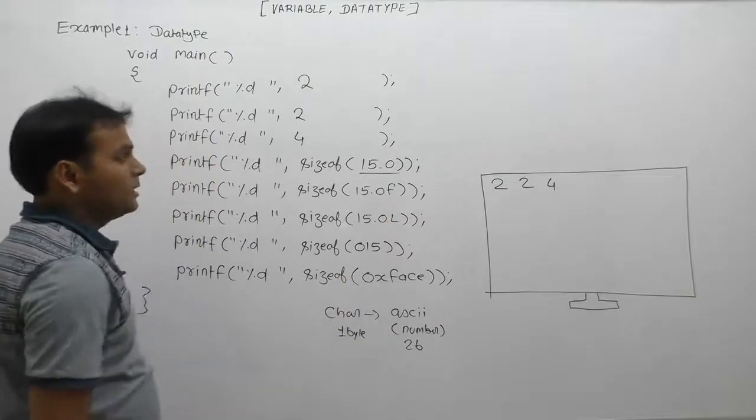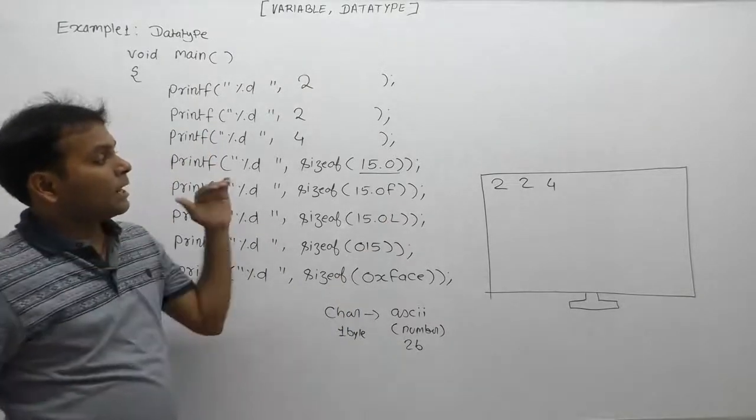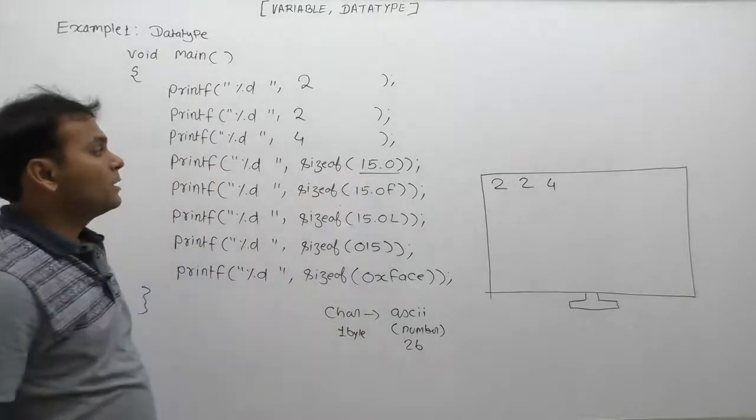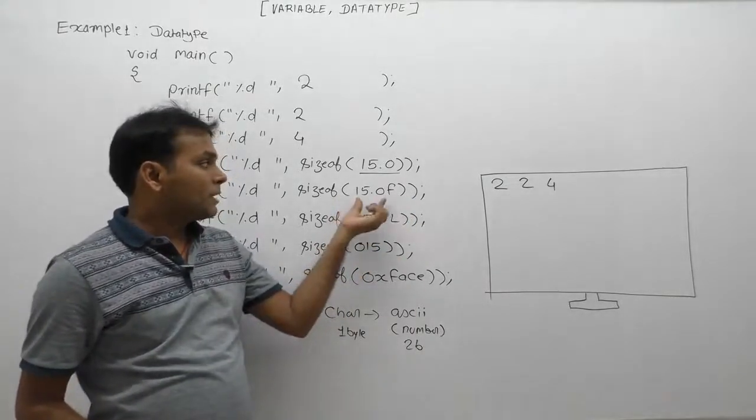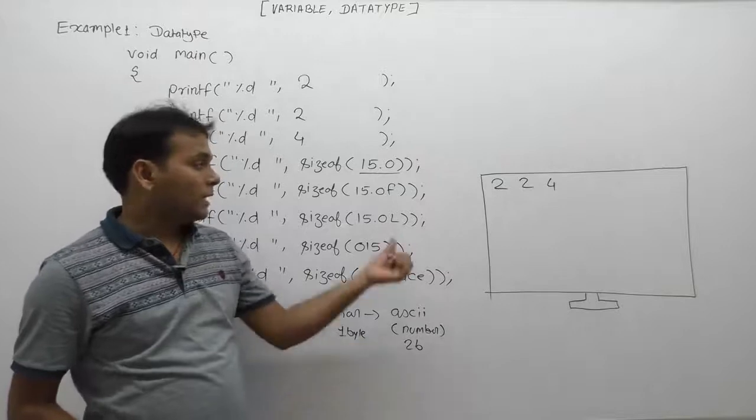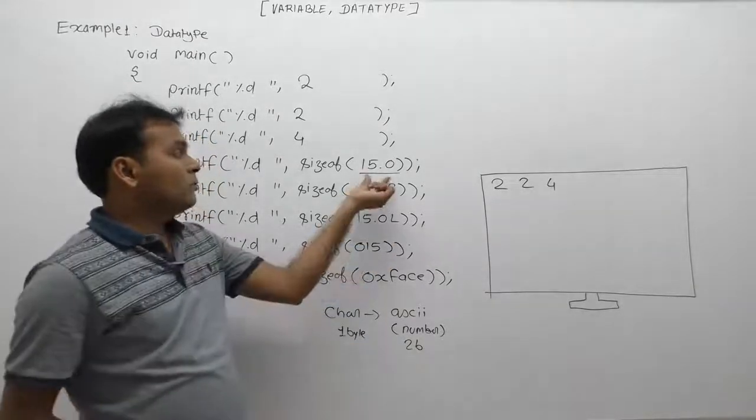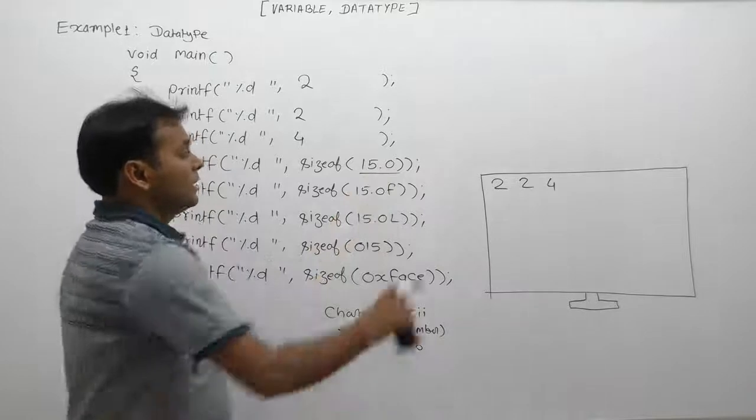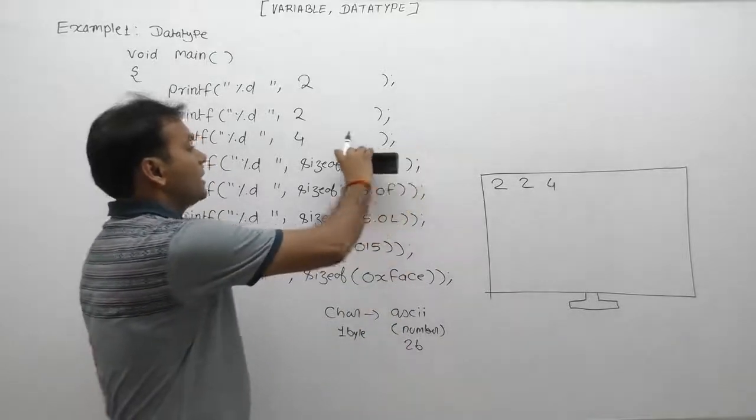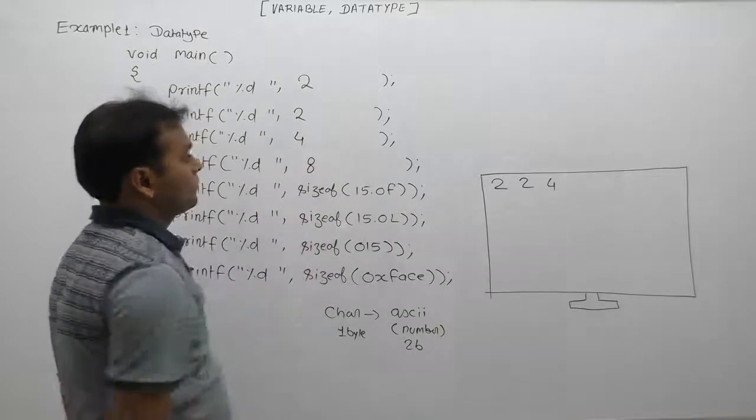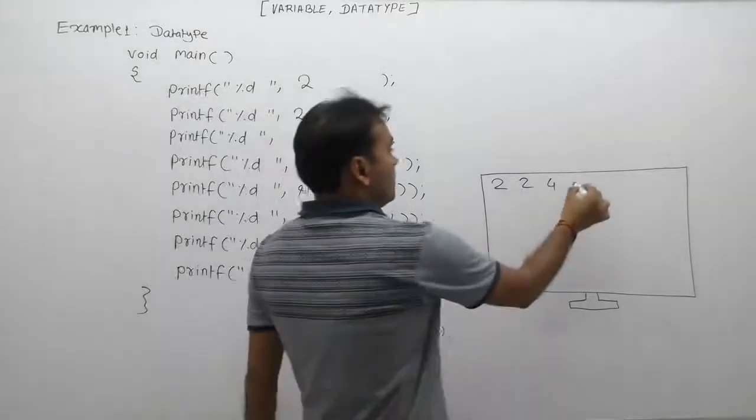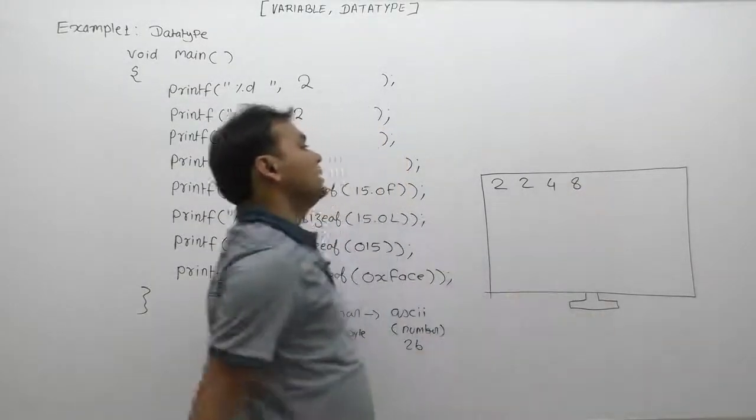15.0 is a decimal literal. By default, a decimal literal is of type double. If qualifier 'f' is used, the value is float. If 'l' is used, it's long double. As we know, the default type is double, and the size of double is 8 bytes. Therefore, the sizeof operator will return 8, and the printed value is 8 bytes.